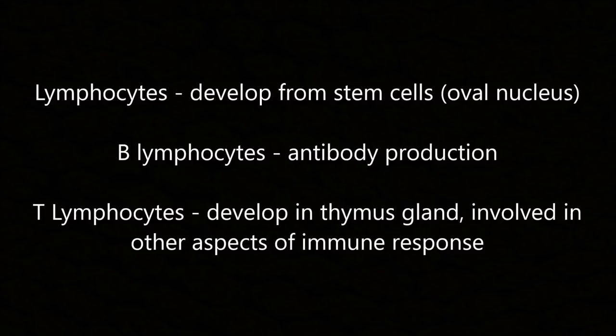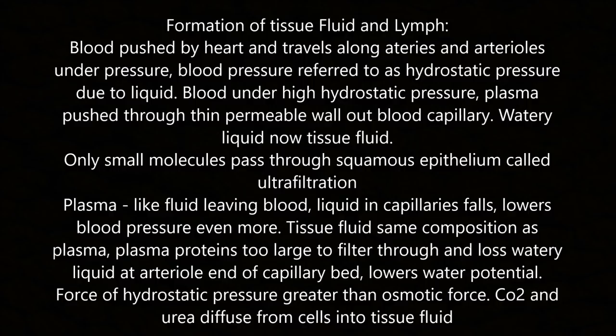Lymphocytes develop from stem cells and have an oval nucleus. They include B lymphocytes, which are involved in antibody production, and T lymphocytes, which develop in the thymus gland and are involved in other aspects of the immune response.